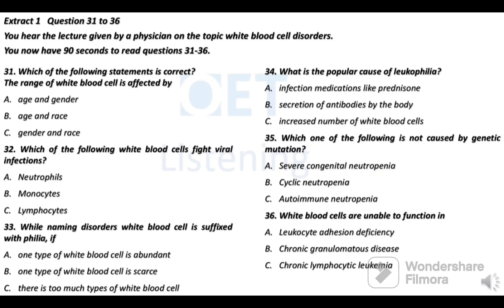There are several different ways to categorize white blood cell disorders. First, they can be categorized by cause — those that affect white blood cell production and others that affect the function of the white blood cell. Secondly, they can be categorized by which type of white blood cell is affected. In some disorders all white blood cells are affected, but others only affect one type. There are five major types: neutrophils, which predominantly fight bacterial infections; lymphocytes, which predominantly fight viral infections; monocytes, which predominantly fight fungal infections; eosinophils, which fight parasitic infections and are involved in allergic reactions; and basophils, which are involved in inflammatory reactions.